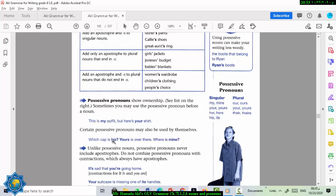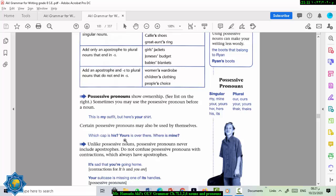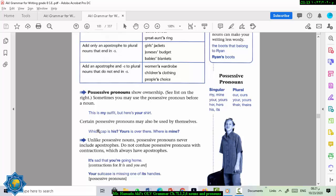Certain possessive pronouns may also be used by themselves. Like here. Which cap is his? So the word his here doesn't require a noun after it. Yours is over there. It means your jacket is over there, for example. Or your cap. So yours. So some possessive nouns, they need a noun after them. And some others, they don't need. If they need a noun, we call them possessive adjectives. Possessive adjectives.